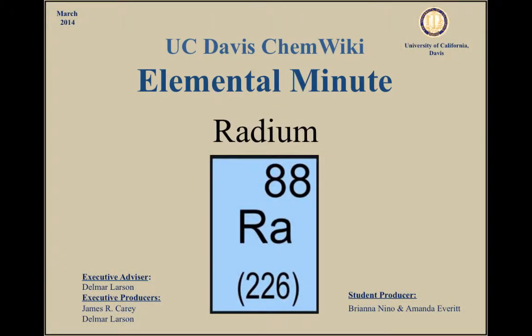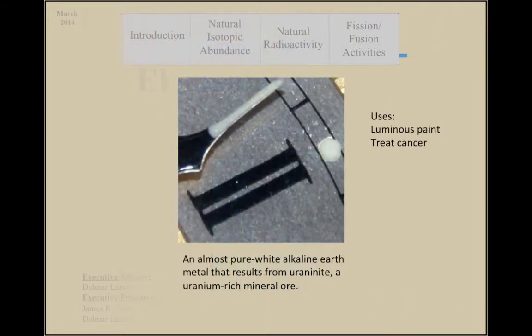Radium, originally discovered by Marie Curie in 1898, soon came to be used as a luminous paint. However, because of its high radioactivity, it was soon found to be too hazardous to use and was discontinued.